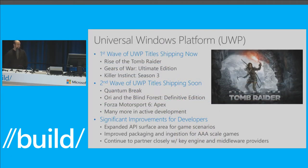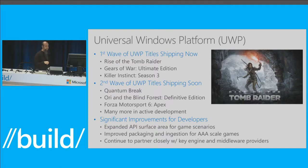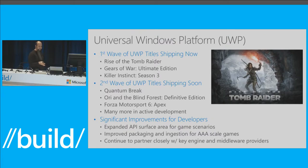The first wave of UWP-based titles are shipping now. We've already shipped Rise of the Tomb Raider, Gears of War Ultimate Edition, and just yesterday we shipped Killer Instinct Season 3. These are all high-profile franchises now shipping on Windows 10, all based on the Universal Windows Platform. Quantum Break ships next week, and if you saw the keynote, you saw a testimonial from the Forza Motorsport 6 Apex team talking about how they leveraged UWP to deliver that Forza experience at a new level of fidelity on PC.